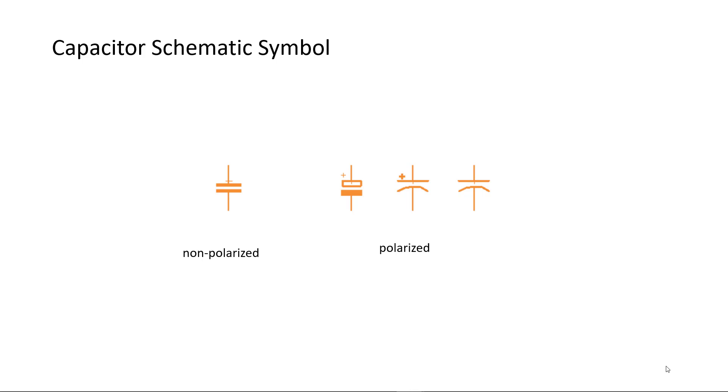The schematic symbol for capacitor reflects the fact that a capacitor is made up of two plates separated by an insulator. However, the three capacitor symbols on the right are used for capacitors that are polarized. Note that two of the polarized capacitors clearly identify the anode or positive terminal and that the curved plate represents the negative.